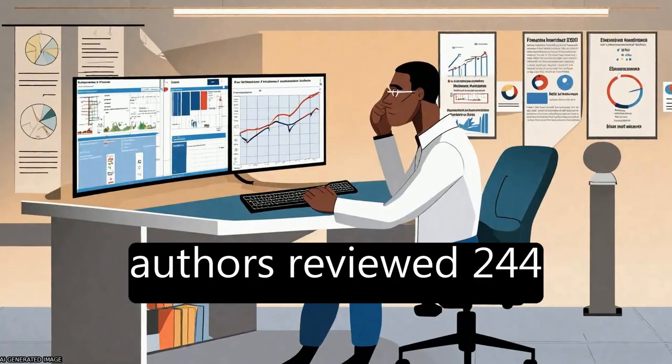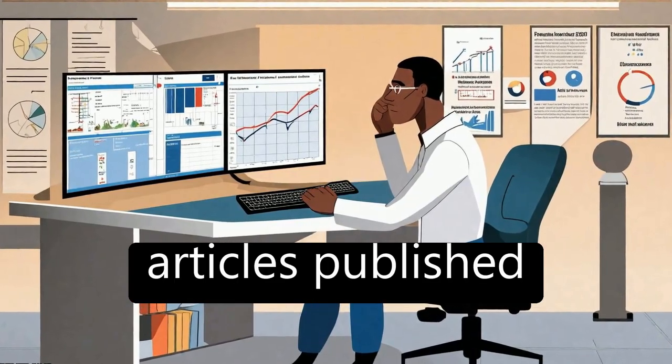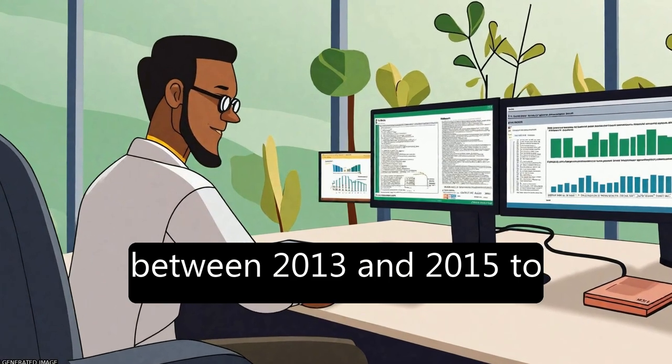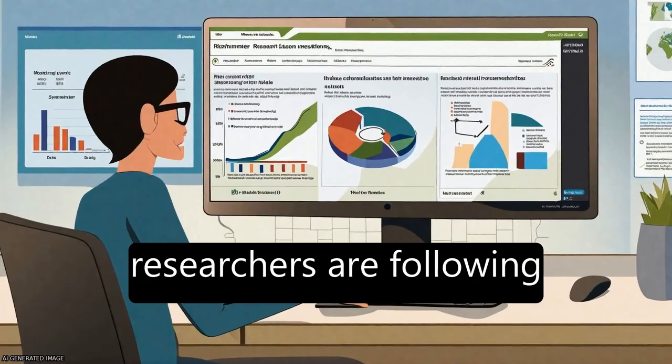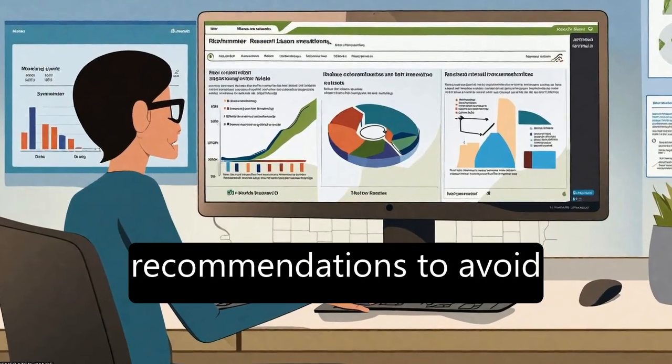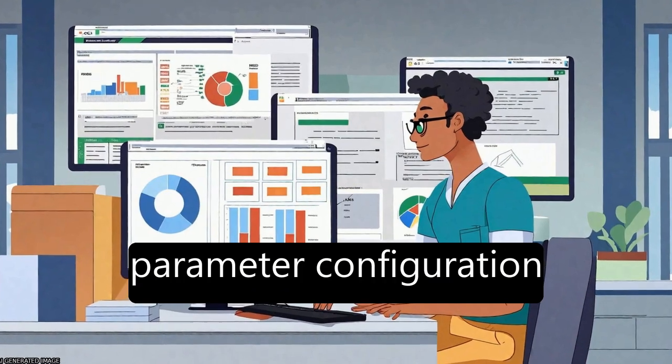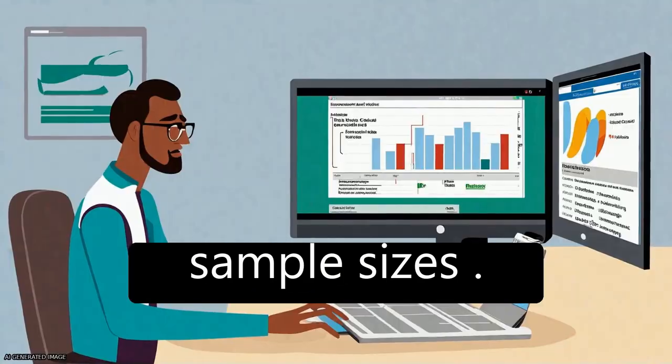In this work, the authors reviewed 244 articles published between 2013 and 2015 to assess whether researchers are following recommendations to avoid using the default parameter configuration when dealing with small sample sizes.